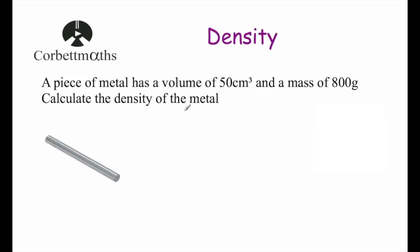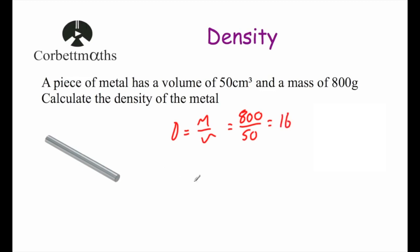Let's look at our first example. A piece of metal has a volume of 50 centimeters cubed and a mass of 800 grams. Calculate the density of the metal. Density = mass divided by volume, so that's 800 divided by 50, which gives 16. Because the units were grams and centimeters cubed, the density is 16 grams per centimeter cubed — meaning this metal has a mass of 16 grams for every centimeter cubed.